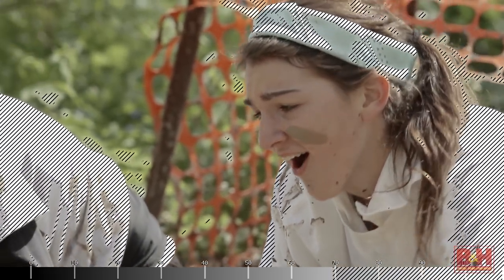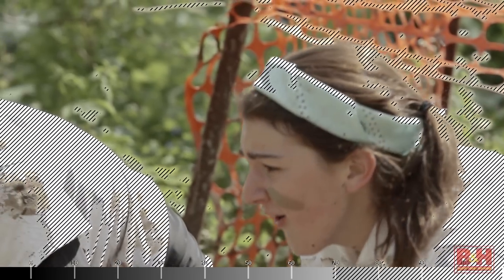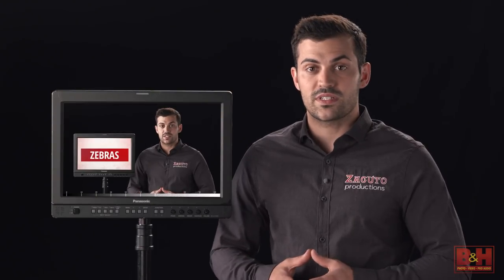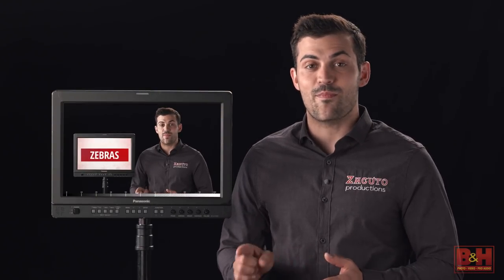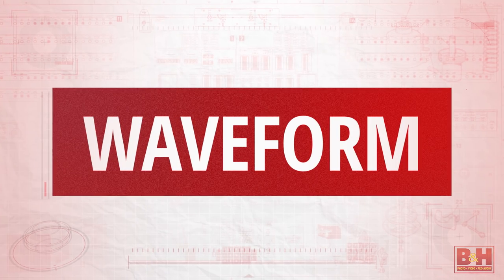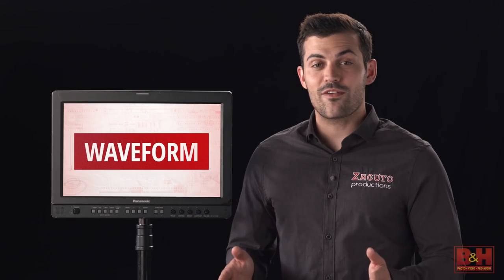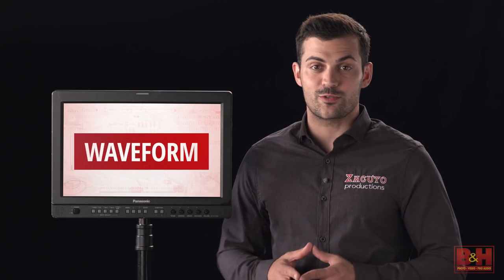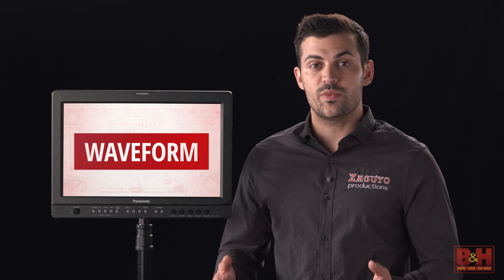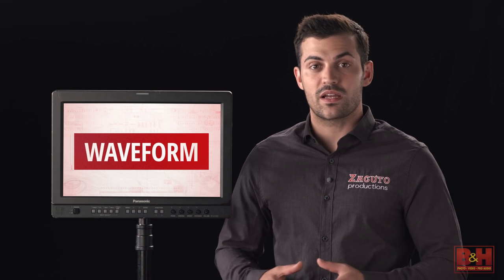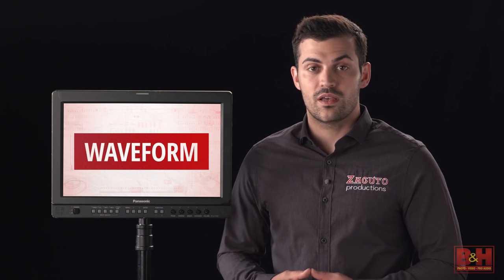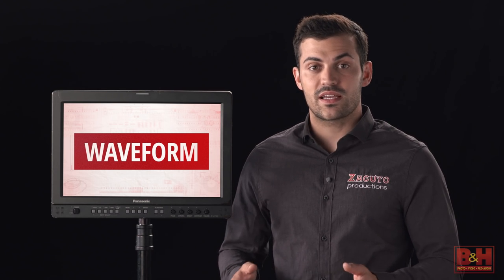For a better, more detailed representation, it's best to use a waveform. The waveform monitor is the most commonly used scope out there. It displays the luminance of the corresponding image using IRE values. IRE stands for Institute of Radio Engineers and is a unit used for measuring luminance.